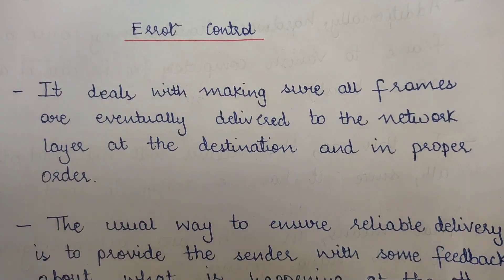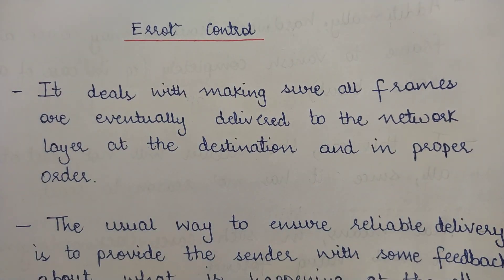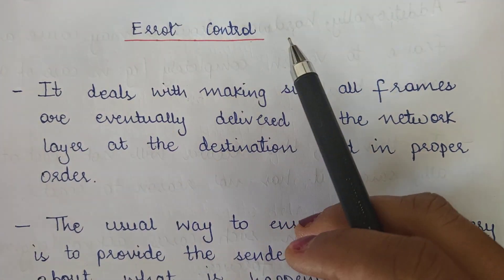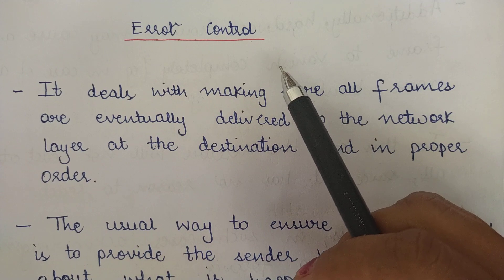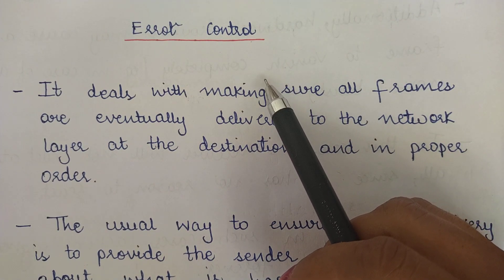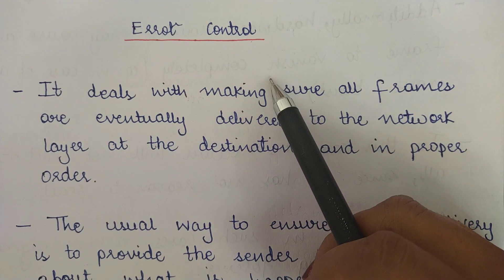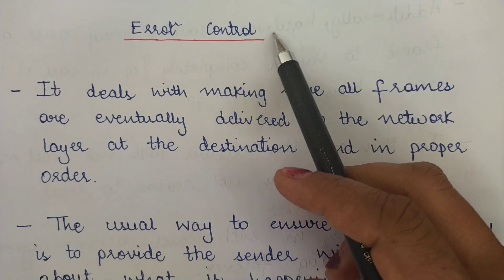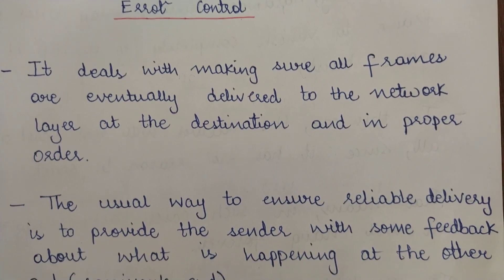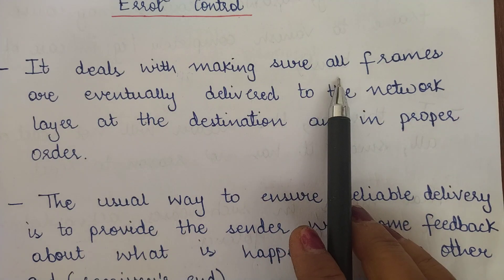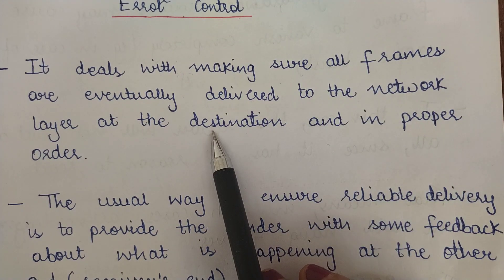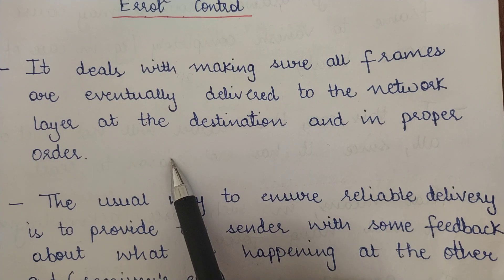Today we are going to study yet another function of a data link layer, which is error control. In our previous video we saw framing, which is a function provided by the data link layer. Today we are going to see error control provided by the data link layer. Error control deals with making sure that all the frames are delivered to the network layer at the destination and in proper order.